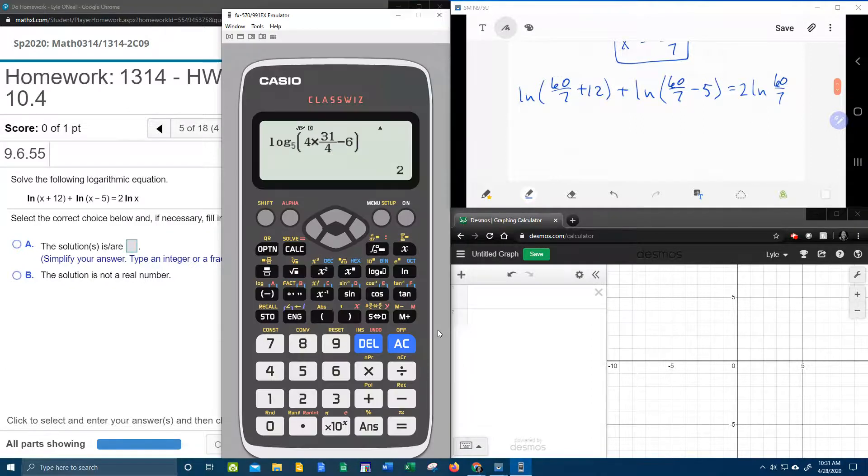Let's bring up our handy-dandy calculator. And the nice thing about this particular calculator is you can put this stuff in here on the left-hand side all at one time, just the way it looks. Here we go. 60 over 7 plus 12, close parenthesis, plus natural log 60 over 7. 60 over 7 minus 5 equals, now that's going to give me a decimal of 4.2.